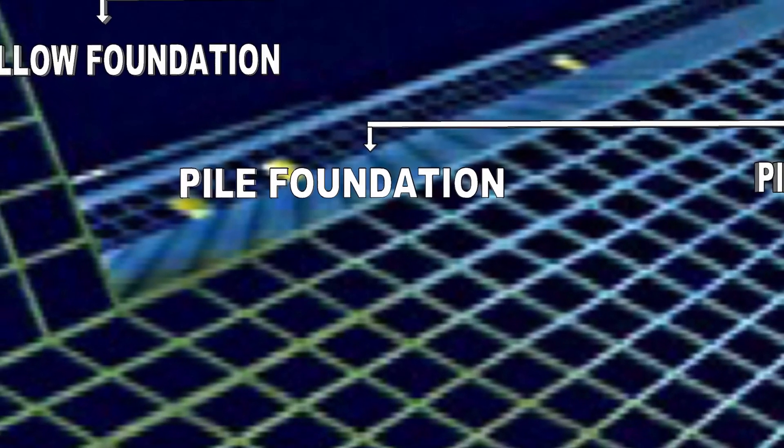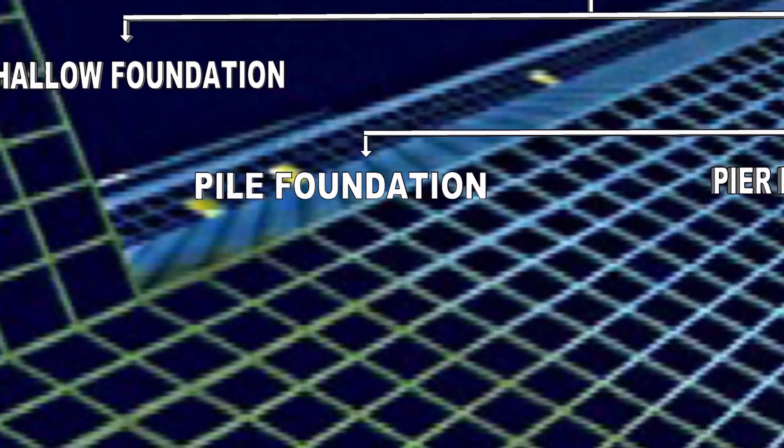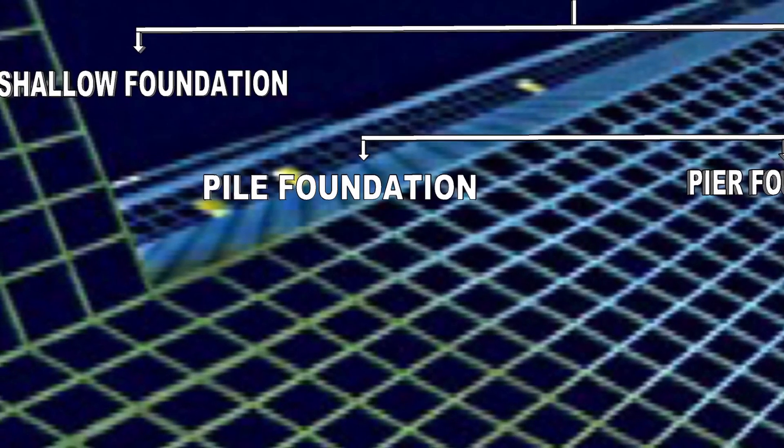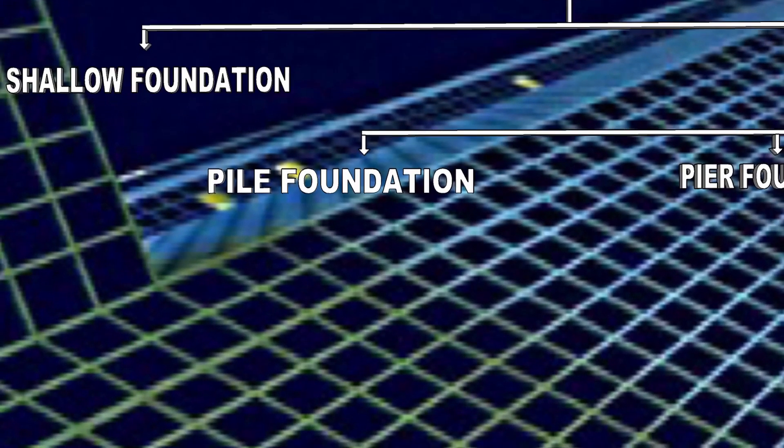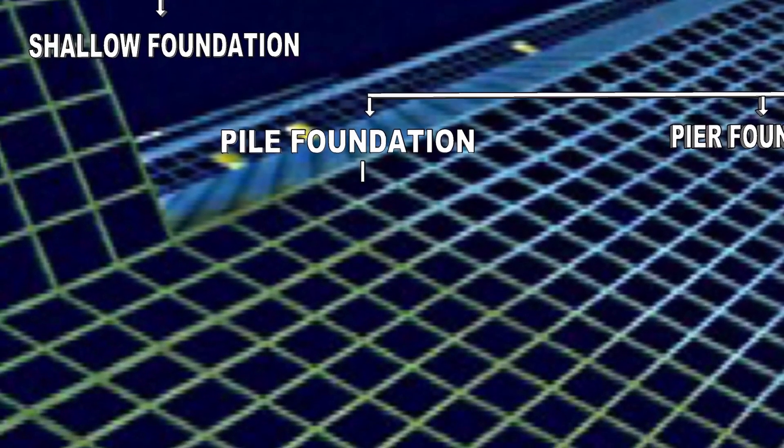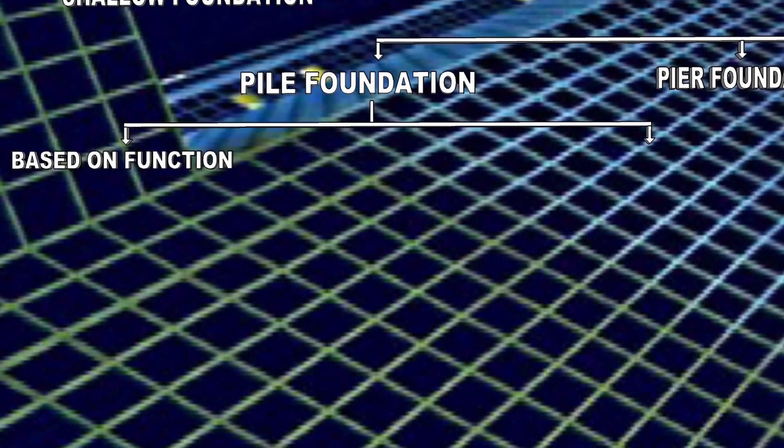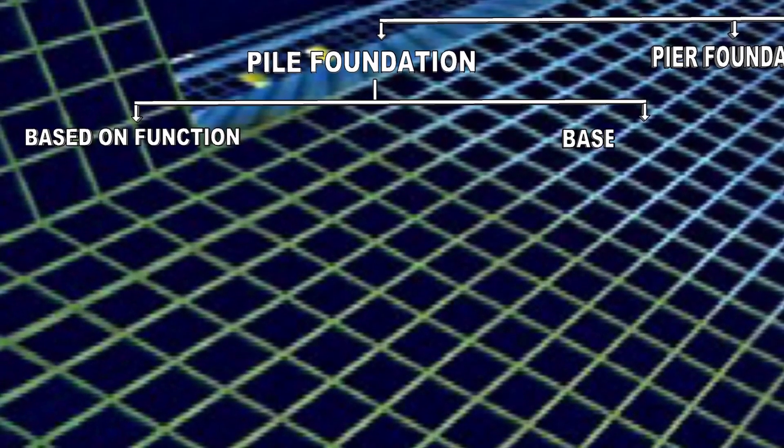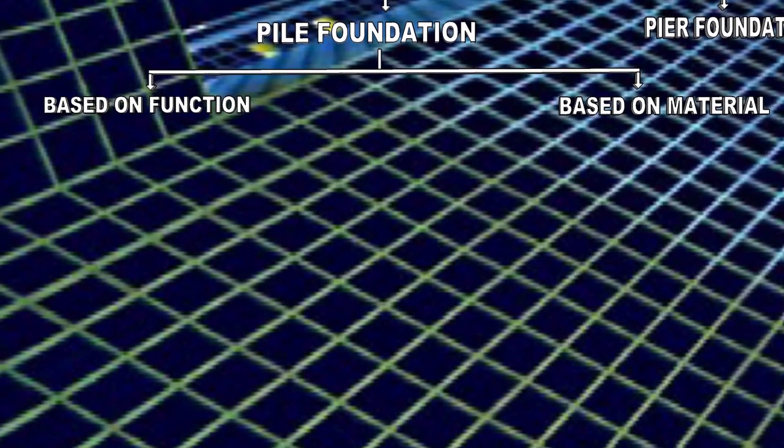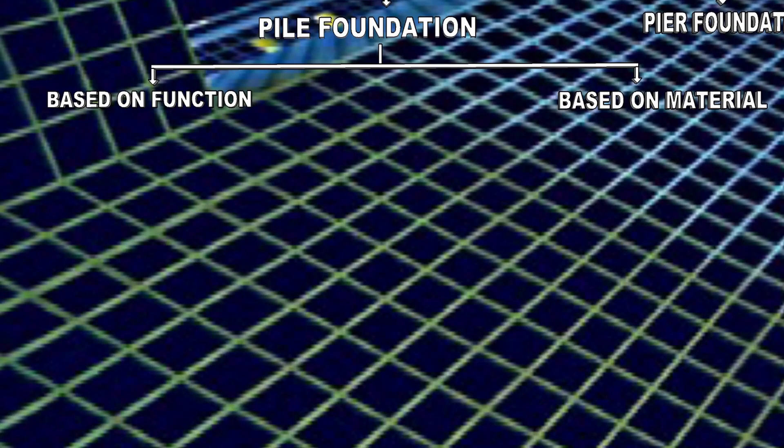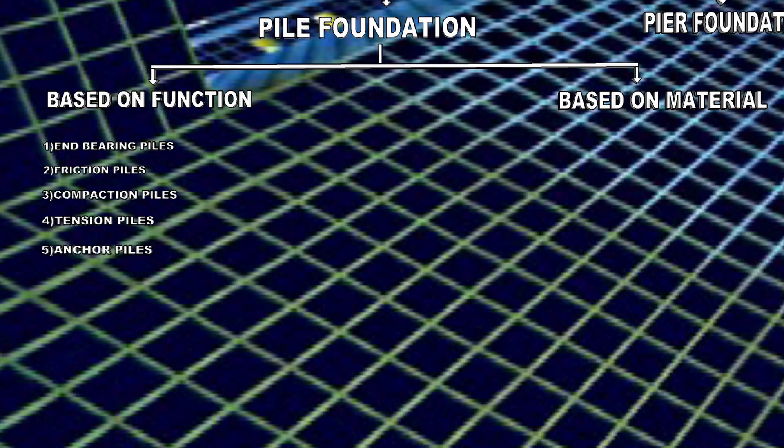In these conditions we use pile foundation. Now let us study the types of pile foundation. Pile foundations are classified into two types: classification based on function and classification based on material. The classification based on function has eight types of piles: end bearing piles, friction piles, compaction piles, tension piles, anchor piles, batter piles, fender piles, and sheet piles.